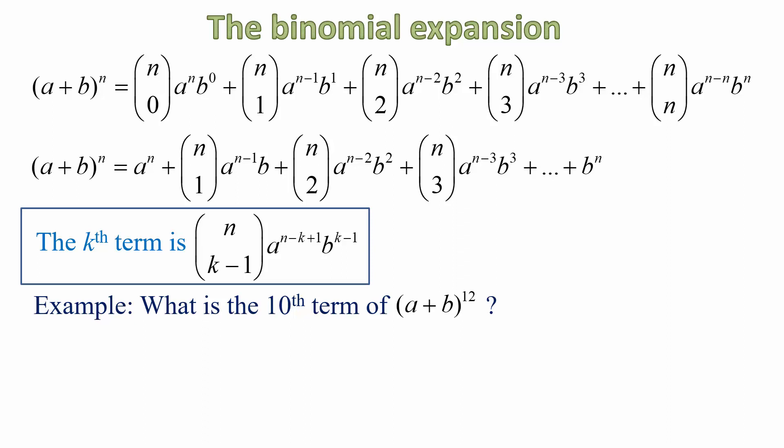Now, what is useful from that is obtaining the K-th term. That means any particular term that we want. That is given by what's shown there in the rectangle, that the K-th term is given by bracket N K minus 1 times A to the power of N minus K plus 1 B to the power of K minus 1.